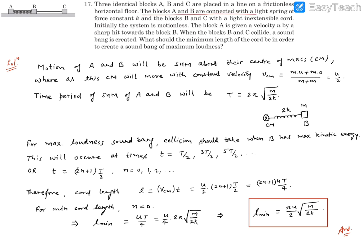The blocks A and B are connected with a light spring of constant K, the blocks B and C with a light inextensible chord. Initially the system is motionless. The block A is given a velocity U by a surface towards block B. When blocks B and C are colliding, a sound bang is created. What should be the minimum length of the chord in order to make this sound bang of maximum loudness?